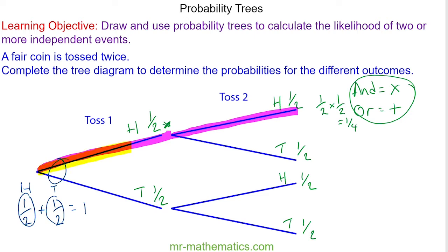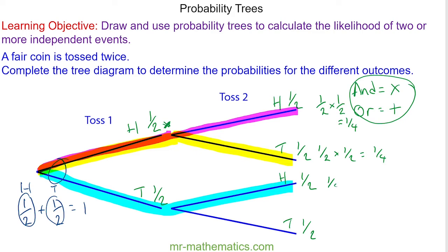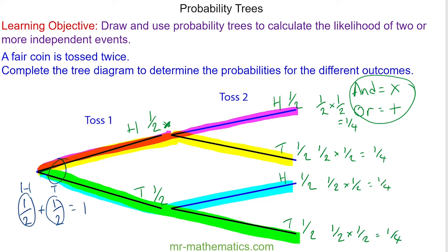You can have a head and a tail, which is again one half multiplied by one half, which is another quarter. Or we can have a tail and a tail, which is again one half multiplied by one half, the same as one quarter. We know this is right because it is certain you will get one of those four outcomes, and four multiplied by a quarter is indeed one, which means certain.